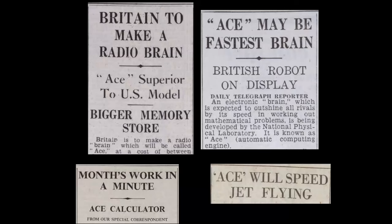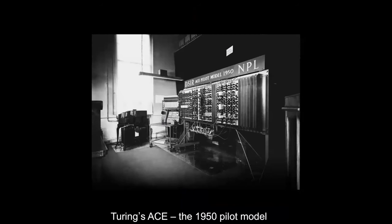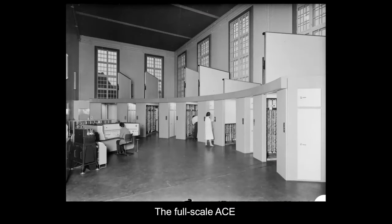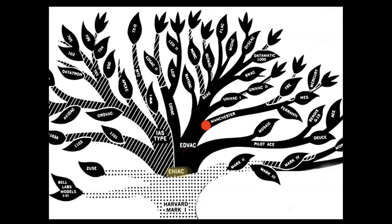A pilot model of Turing's ACE first ran in 1950. Its speed was a blazing one megahertz — exceptional for the time. This is the full-scale version of the ACE. It first ran in 1958 and was used, among other things, for early AI research. Finally, Manchester. The initiator here was Max Newman. By Newman's own account, it was some lectures he gave on the foundations of mathematics in Cambridge in 1935 that set Turing on the course leading to the universal machine.